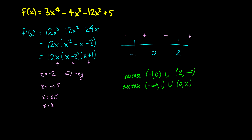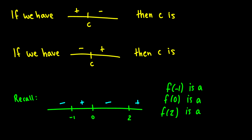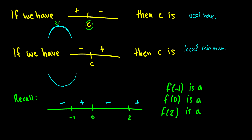Now we can see what the first derivative test really is. If we go from positive to negative at a point C, then C is a local maximum. If we go from negative to positive at C, then C is a local minimum. Visually, if the slope is positive and then goes negative, the graph has a peak — a maximum. If the slope is negative then goes positive, we have a minimum.